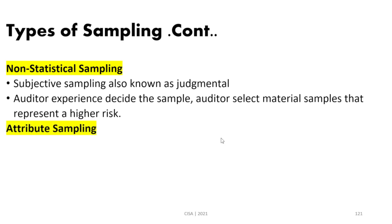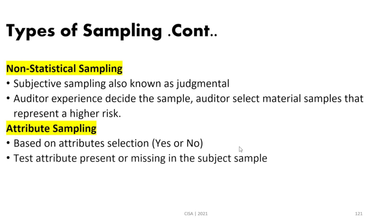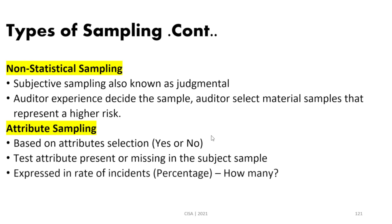Another type of sampling is attribute sampling, which is based on a yes-or-no selection — we select samples that meet a specific criteria. For example: are males under 21 complying with this requirement? Yes — you are part of the sample; no — you are not. We test whether the attribute is present or missing. Attribute sampling is expressed as a percentage or rate of incidence, answering the question of 'how many,' and it is used in compliance testing.